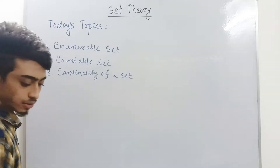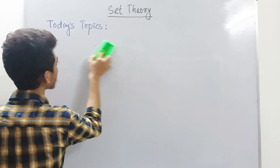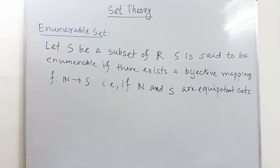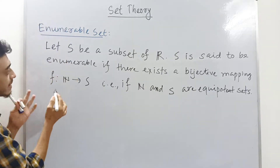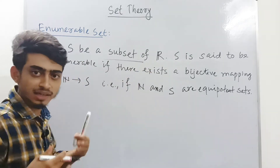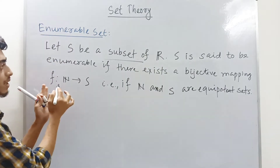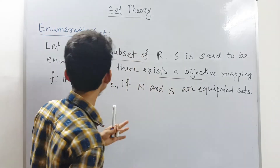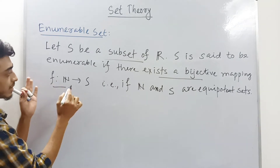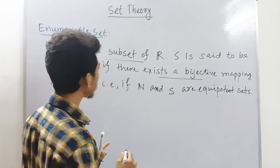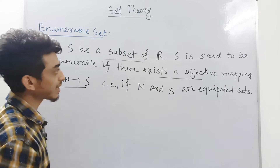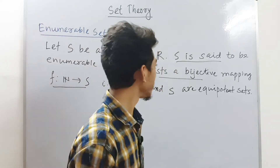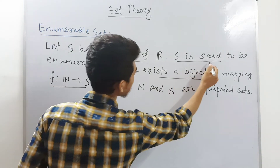First of all, we will talk about enumerable set. So let me write the definition of enumerable set. So this is the definition of enumerable set. We are considering a subset of real numbers — let S be a subset of real numbers. S is said to be enumerable if there exists a bijective mapping. If such a bijective mapping exists, then we will say that S is enumerable.